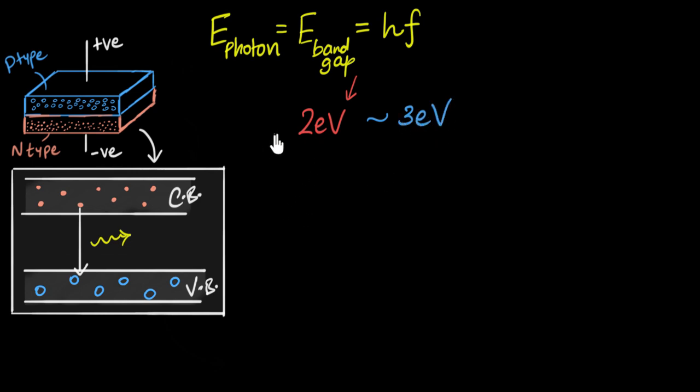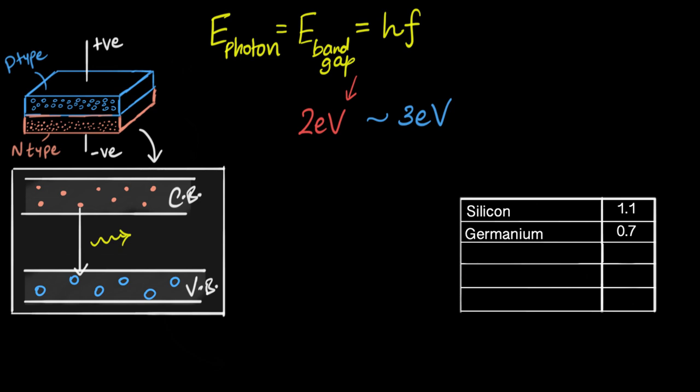If the band gap is less than two, we're now going into the infrared region. Even less becomes microwave and so on. And if you go about three electron volts, now you're going towards ultraviolet region, and even above that, we now enter into x-rays and gamma rays. Now let's look at the band gaps of the semiconductors that we already know. We know about two semiconductors, silicon and germanium. Turns out silicon has a band gap of about 1.1 electron volt and germanium about 0.7 electron volt. Can you pause the video and think about why we don't use silicon or germanium to build our LEDs?